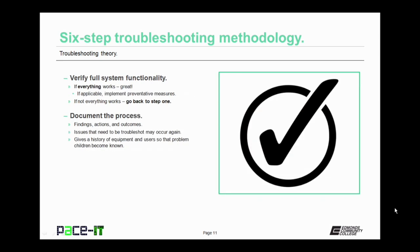After you have executed your plan, you need to verify full system functionality. If everything works, great! This is where, if it's applicable, you implement preventative measures to prevent the problem from occurring again. If full system functionality has not occurred, that's not quite so great — now you need to go back to step 1.